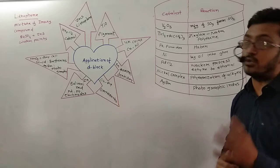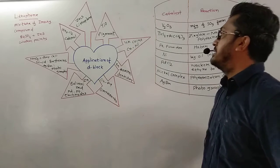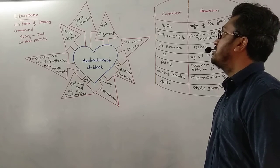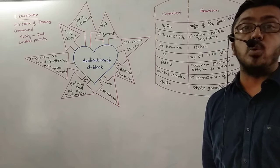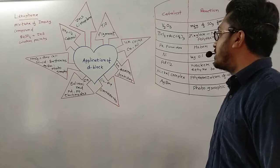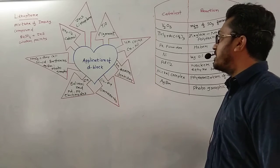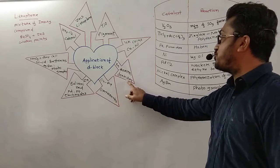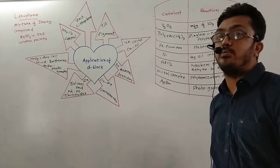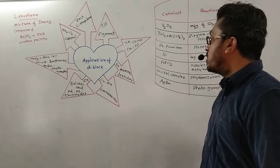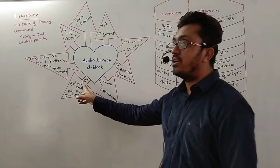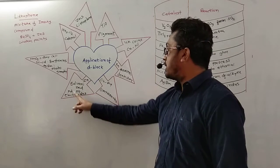The applications of d-block are here. Number one: UK coins, United Indian coins, copper-nickel. This mixture is known as cupro-nickel coins. Then mercury is used in thermometers and dentistry processes. Then copper and gold ornaments, zinc for galvanization.